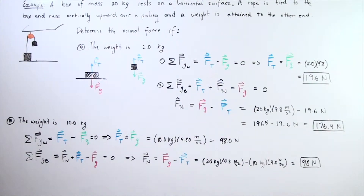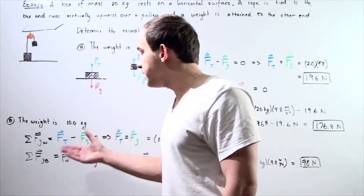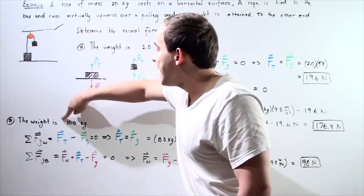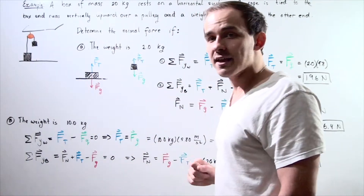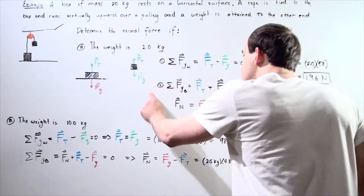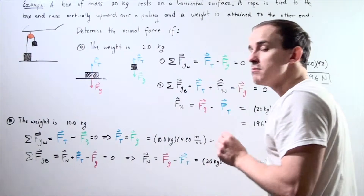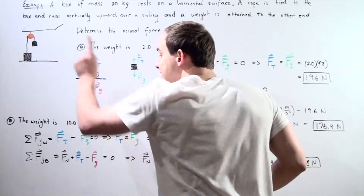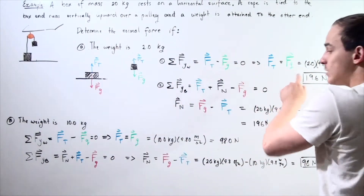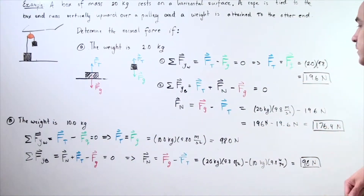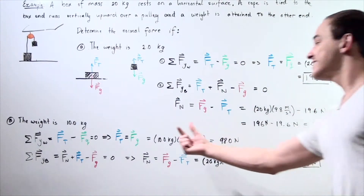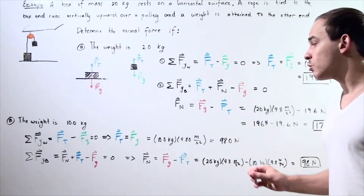In part B, we change the hanging weight to 10 kilograms. We set up the same two free body diagrams and two sets of equations. Summing forces along the y-axis for the hanging weight, tension equals the gravitational force: 10 times 9.8 gives us 98.0 newtons. So our tension is now 98 newtons instead of 19.6 newtons.